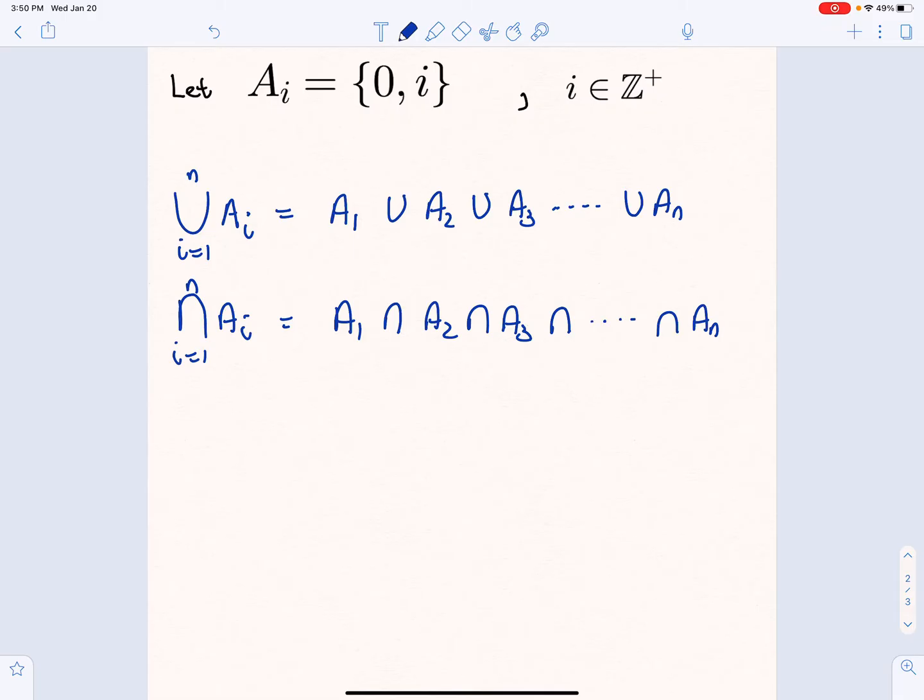So just to understand where we're coming from with this given set here, we have A sub i is equal to the set {0, i}, where i is a positive integer. So this means things like A₂ is the set {0, 2}. Okay, so let's just look at a couple examples.